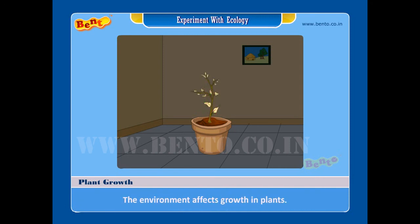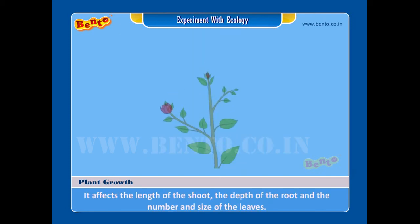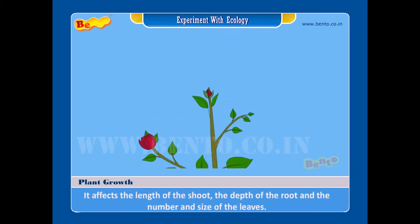The environment affects the length of the shoot, the depth of the root, and the number and size of the leaves.